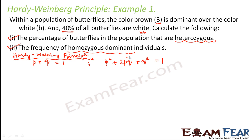In this equation, 2pq gives the frequency of heterozygous individuals, p² gives the frequency of homozygous dominant, and q² gives the frequency of homozygous recessive. In this question, 40% of the butterflies are white, which means the frequency of homozygous recessive is 40%.